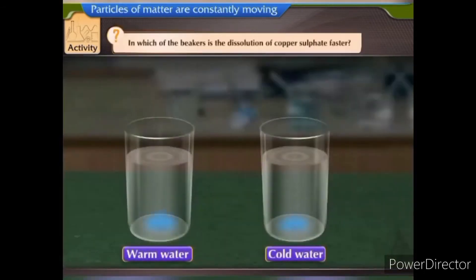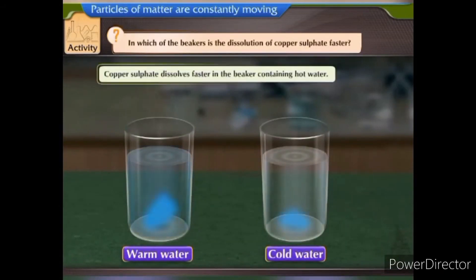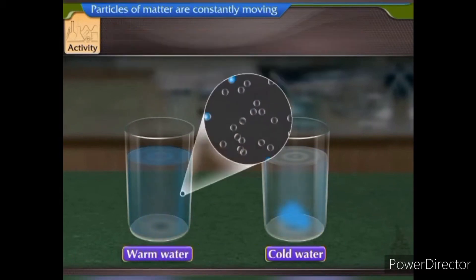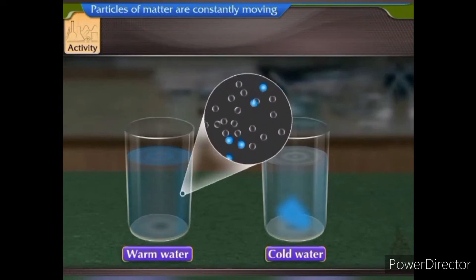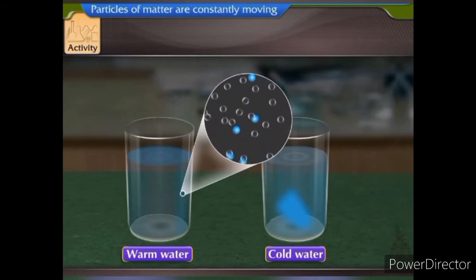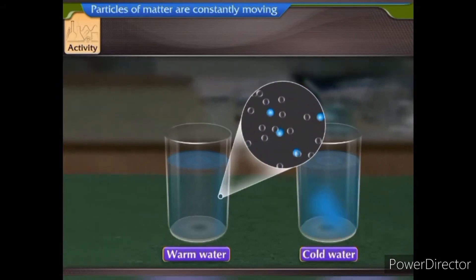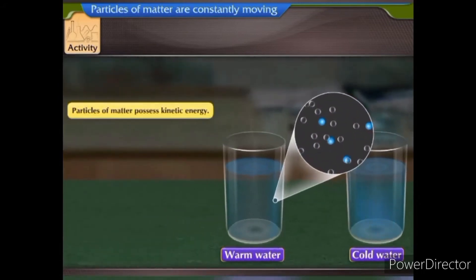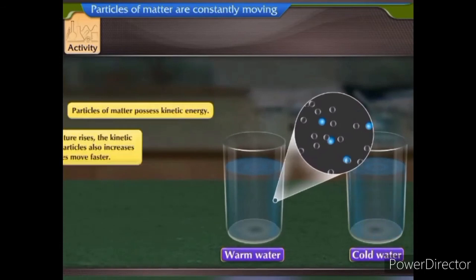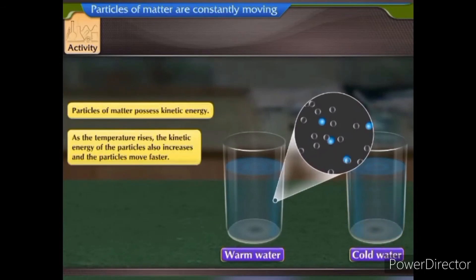In which of the beakers is the dissolution of copper sulphate faster? Copper sulphate dissolves faster in the beaker containing hot water. On heating, the particles of water and copper sulphate gain kinetic energy and move faster. Due to faster movement, they mix with each other quickly.